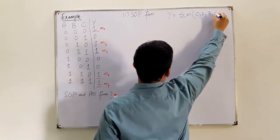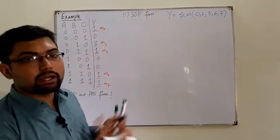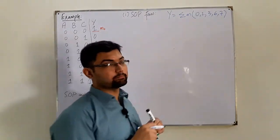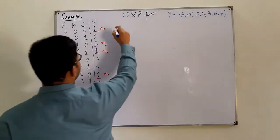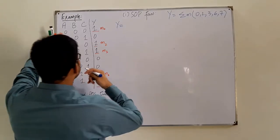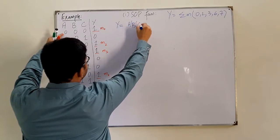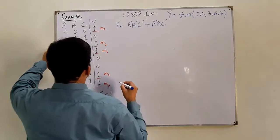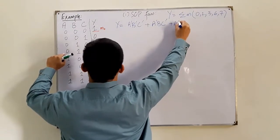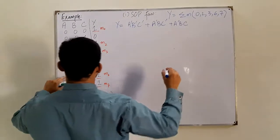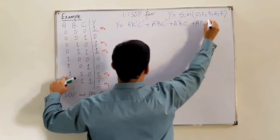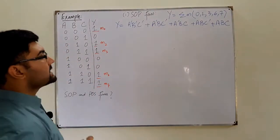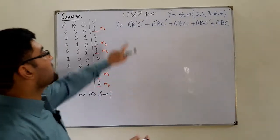If you can solve it yourself, pause the video and try, then check. Now this Y would be: all zeros gives A'B'C', then A'BC', then A'BC, then ABC', and then all high gives ABC. This is the standard canonical sum of product form.